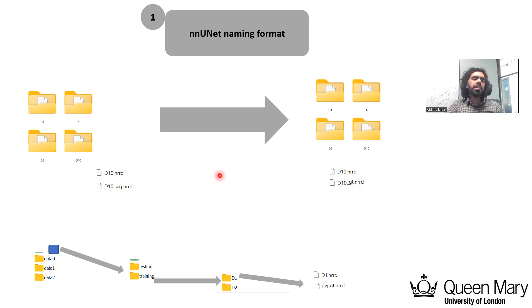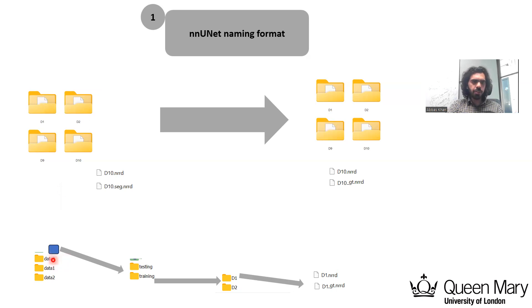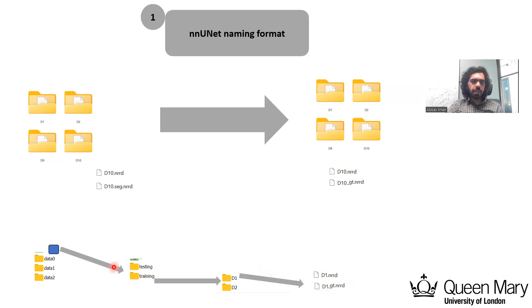This conversion step is different for each dataset. Some datasets may already be in this format, but the one used here was not. We need to write a Python script accordingly. When working on multiple datasets, for example dataset zero, there should be a folder named 'data0', and inside it two folders named 'training' and 'testing'. Each of those contains subject folders like d1, d2, d3, d10, and inside each subject folder there are files like d1.nrd and d1_gt.nrd.